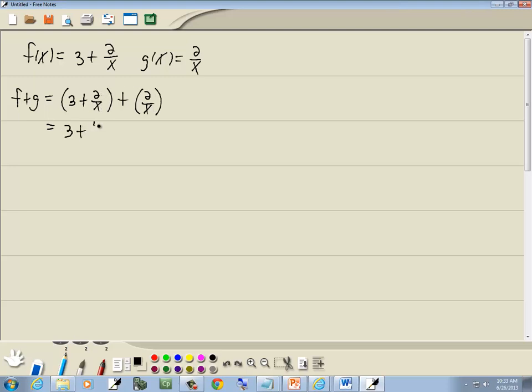So this becomes 3 plus 4 over x. Now we want to merge this into a single fraction. And this is a mixed number form. So we're going to take the number that's out in front, multiply it times the denominator, and add the top part. So we're going to take 3 times x, and then we'll add the number up on top. And our denominator stays the same.